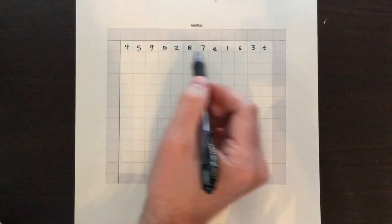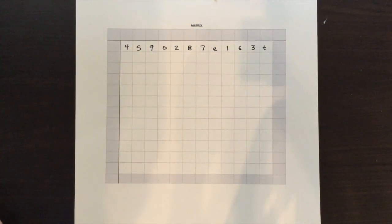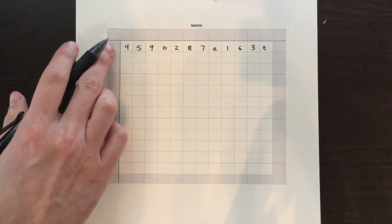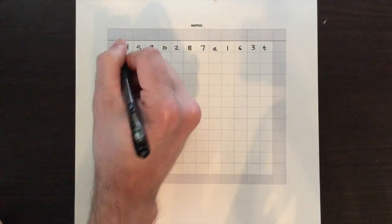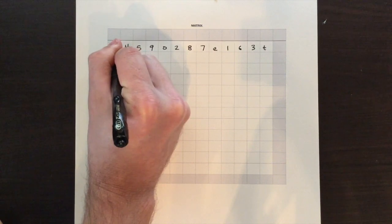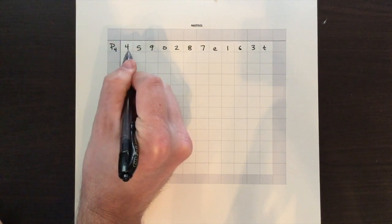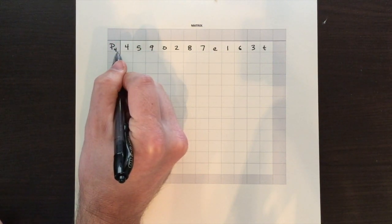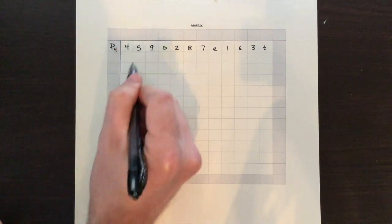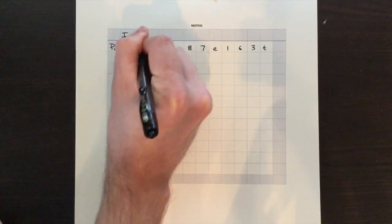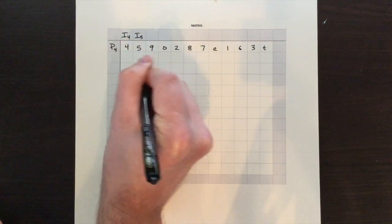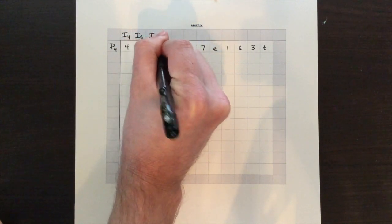So I've started here with our P row here that you're given. You'll always be given your first row, you'll put it on the top row of your matrix. The first thing you want to do is label it as P4. The first number here is always going to be what our index number is. Next we want to label our I columns and they will correspond with each number. So I4, I5, and so on.